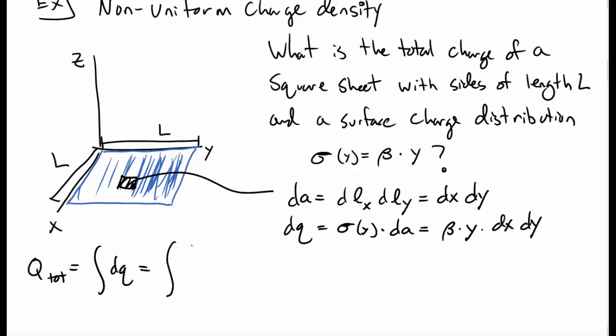The total charge is, as always, the integral over dq. Since this is a sheet that's going to be a double integral. So, we have beta times y dx dy, where x and y run from 0 to l each. So, this is two separate integrals. We have an integral from 0 to l of y dy. And then, we have an integral from 0 to l of just dx.